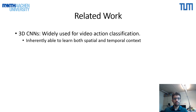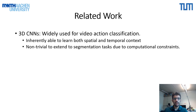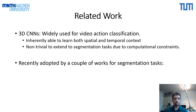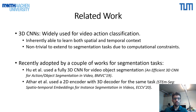On the other hand, for video classification tasks, 3D CNNs have become the standard in recent years. They are an attractive option for video processing since they can jointly learn features across space and time. For segmentation tasks, however, we typically work with high image resolutions. This imposes computational constraints, making it difficult to trivially extend 3D CNNs for such tasks. There has been some progress recently with a couple of published works using 3D convolutions either fully or partially for segmentation tasks, but their performance still lags behind state-of-the-art 2D CNN-based approaches.